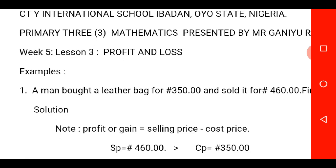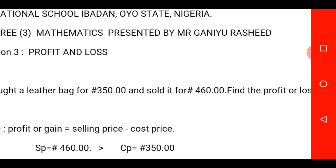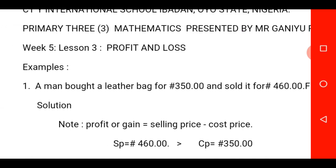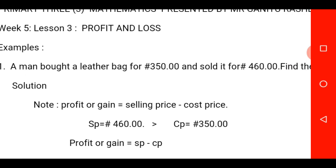Examples now. Number 1: A man bought a leather bag for 350 naira and sold it for 460 naira. Find the profit or loss. In this topic, you need to be very, very careful. I want you to understand some facts concerning the topic profit and loss. The first thing you need to know is that another name for profit is gain. If you don't call it profit, you can call it gain — you are still saying the same thing. And there is a formula for calculating profit or gain.